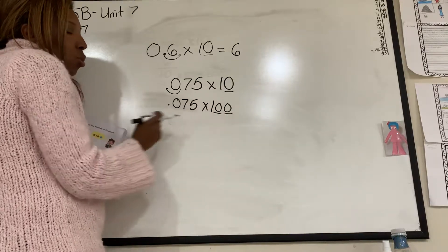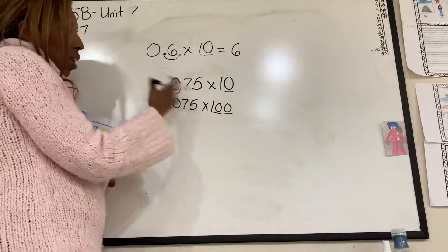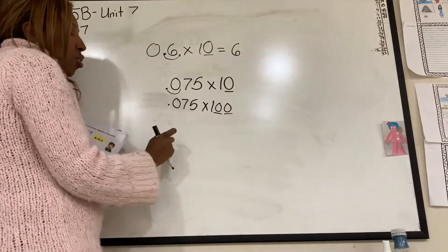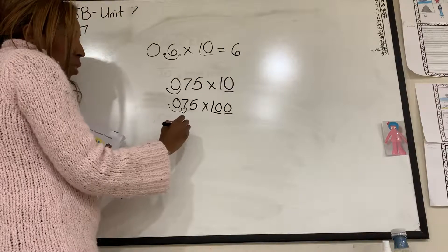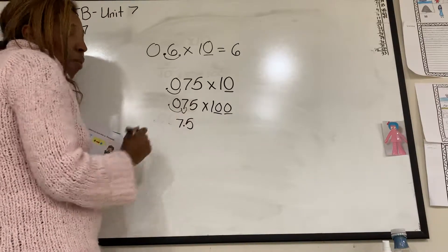I have one, two zeros. So I'm going to move it one, two spots. And I'm going to get 75. And that would be my answer.